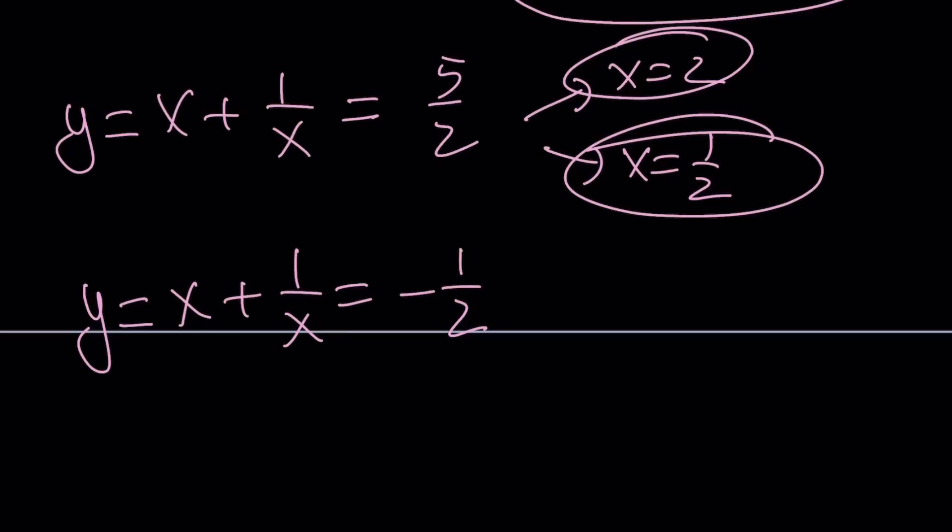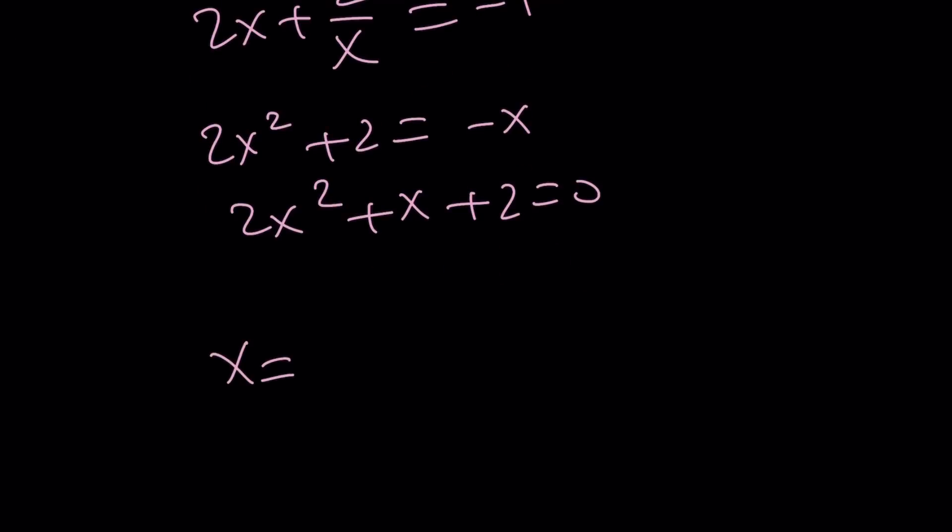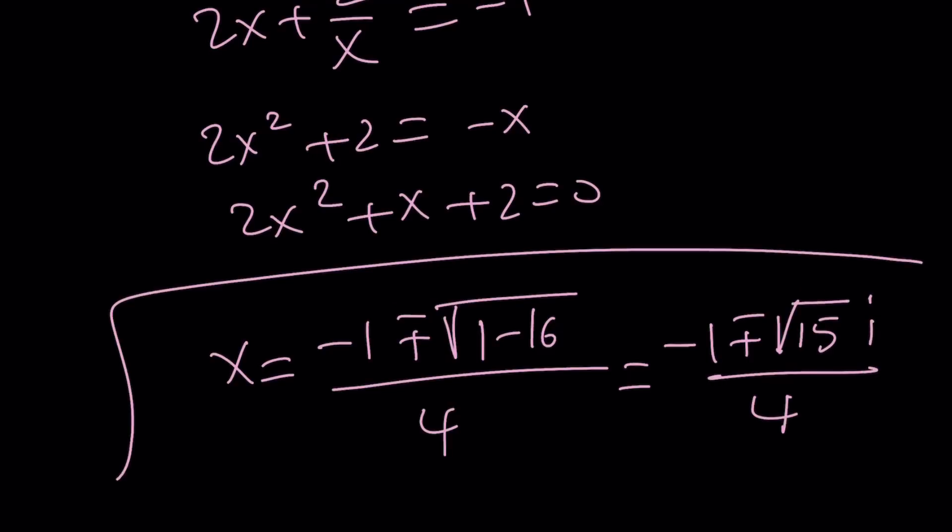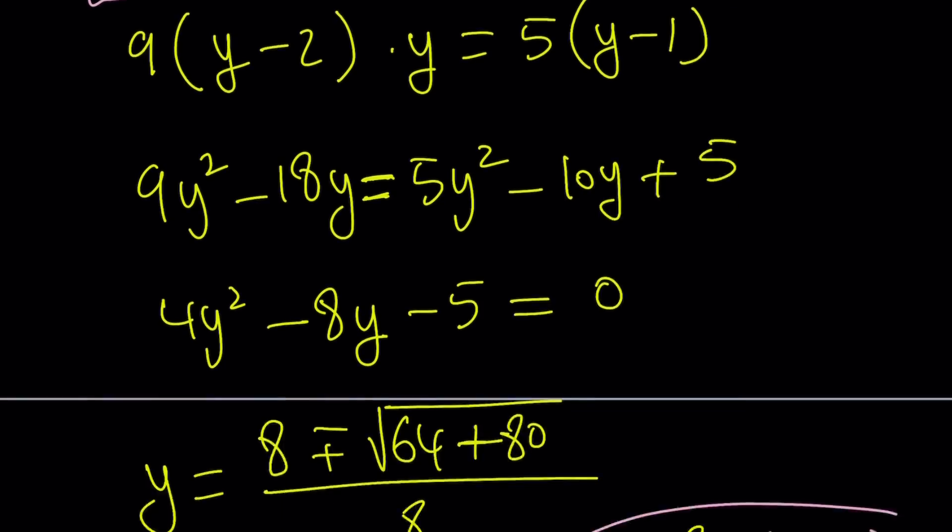That's going to give us 2x plus 2 over x equals negative 1. Let's multiply everything by x: 2x squared plus 2 equals negative x. 2x squared plus x plus 2 is equal to 0. From here, x equals negative b, plus minus the square root of b squared, 1 minus 4a times 16. Uh-oh. The results are not good. Unfortunately, we don't have real solutions. So these solutions are just going to be complex. But that's okay. We got two complex solutions and two real solutions for x in our original problem.